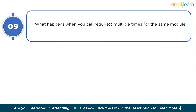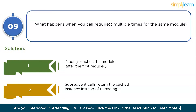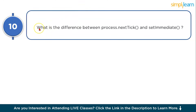Question 9: what happens when you call require() multiple times for the same module? In Node.js, when you use require() to import a module it gets loaded and cached the first time. If you call require() for the same module again, Node.js does not reload it — instead it returns the cached version. Modules are loaded only once per application.